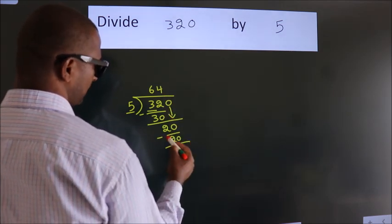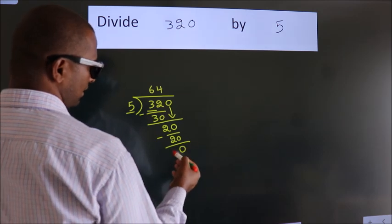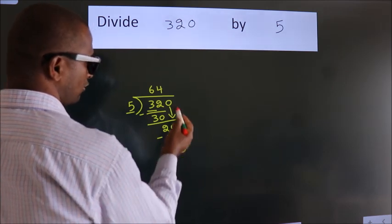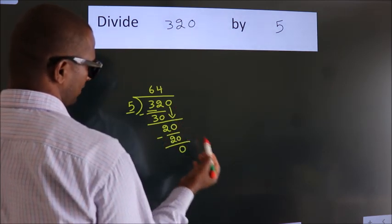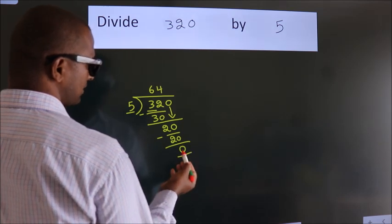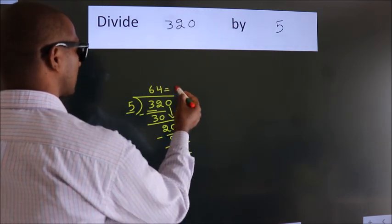Now, we subtract. We get 0. After this, no more numbers to bring it down. And we got remainder 0. So, this is our quotient.